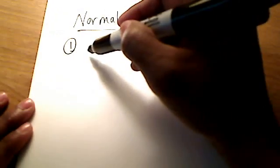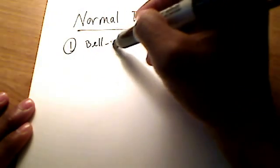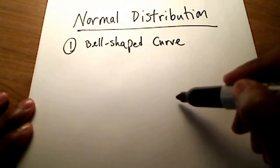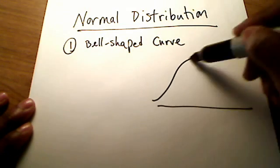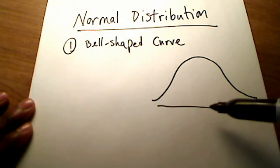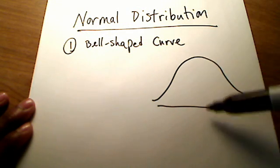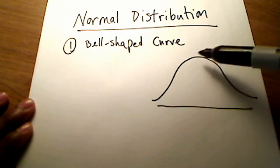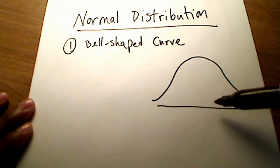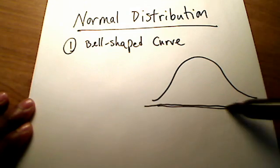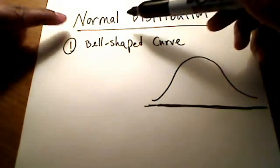The first thing is that you have what's called a bell-shaped curve. It basically looks like this right here. That means that the mean, which is sitting right here in the middle, has the most data around it on either side. I'll talk more about that later. But definitely, bell-shaped curve is one of the first things that should come to mind when you read that word normal.